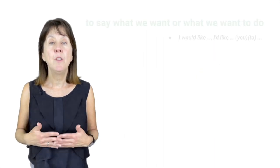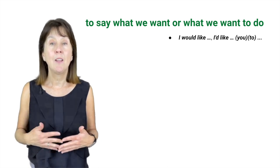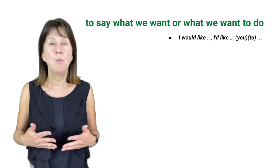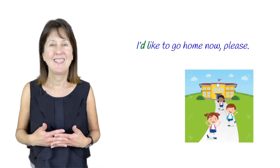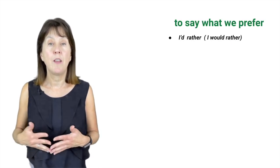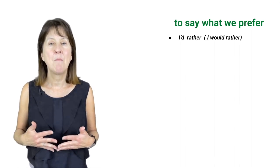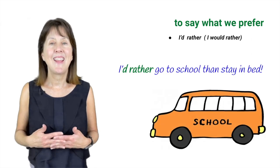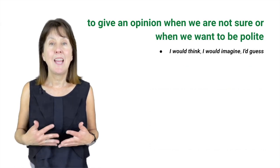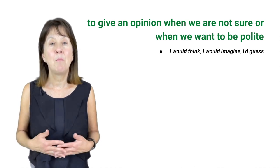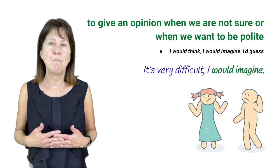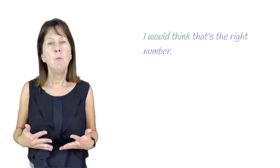An expression to say what we want is 'I would like' or 'I'd like you to do something.' For example, 'I'd like that one please' or 'I'd like to go home now please.' The expression 'I'd rather' — an abbreviation of 'I would rather' — expresses preference, for example, 'I'd rather go to school than stay in bed.' Finally, 'I would think,' 'I would imagine,' and 'I'd guess' are used to give an opinion when we are not sure or want to be polite, for example, 'It's very difficult, I would imagine' or 'I would think that's the right number.'